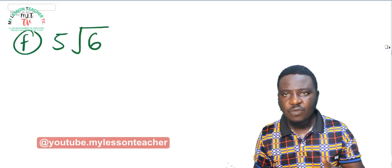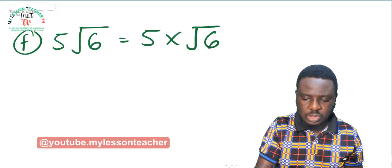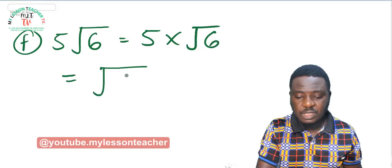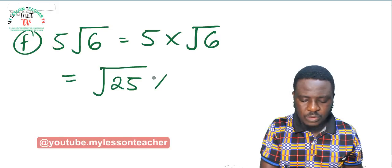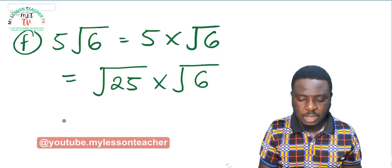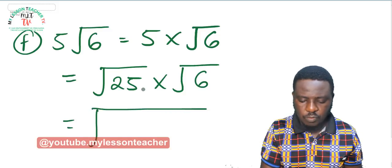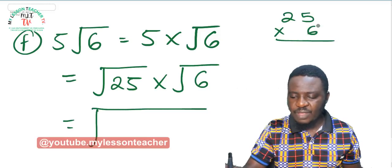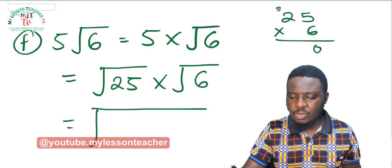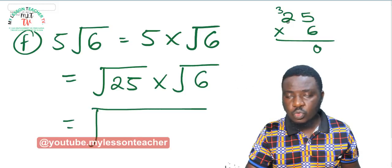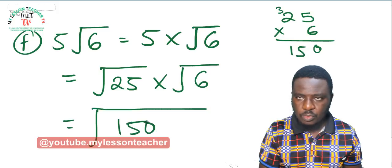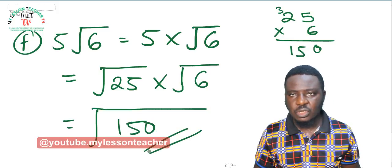Example F: 5 root 6. Expand to 5 times root 6. Since root 25 equals 5, this becomes root 25 times root 6, which equals root of 25 times 6. Calculating 25 times 6: 5 times 6 is 30, write down 0 and carry 3; 2 times 6 is 12, plus 3 is 15 — giving 150. So the answer is root 150.